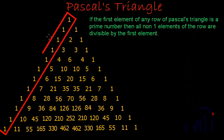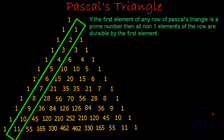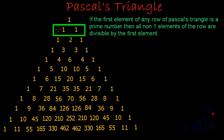As you know, all the ones are the zeroth element of each row, and these are the first elements of each row. For the zeroth row we have only one element, and for the first row we have two elements and both are ones, so we need not check the rule in this row.